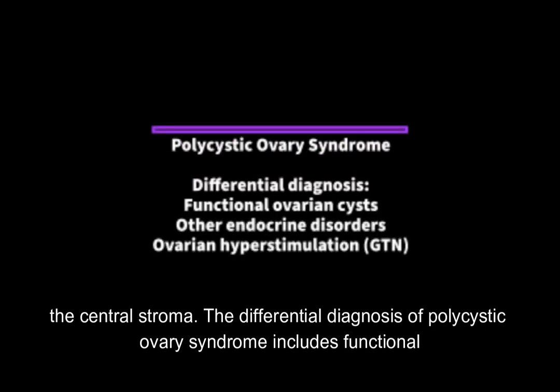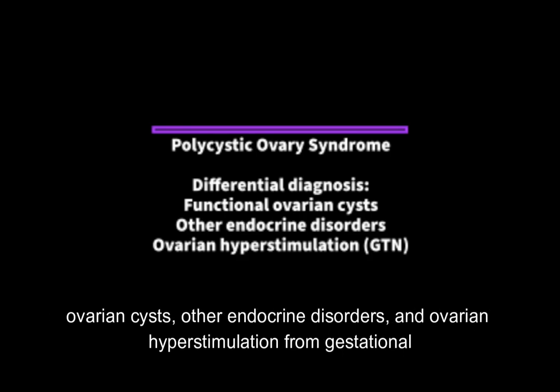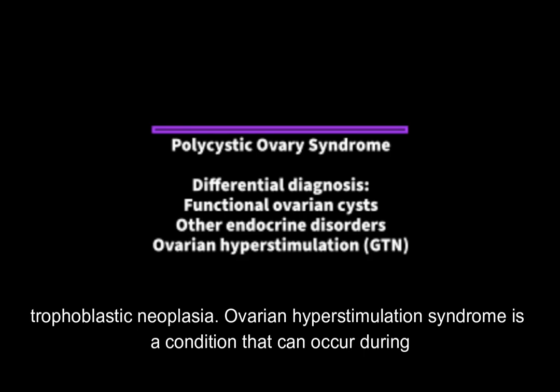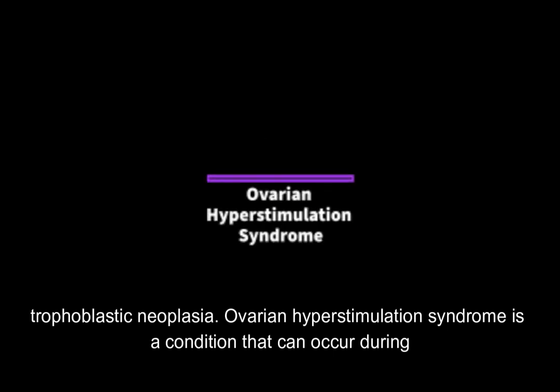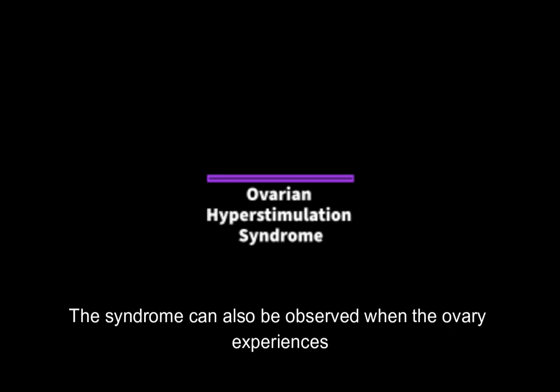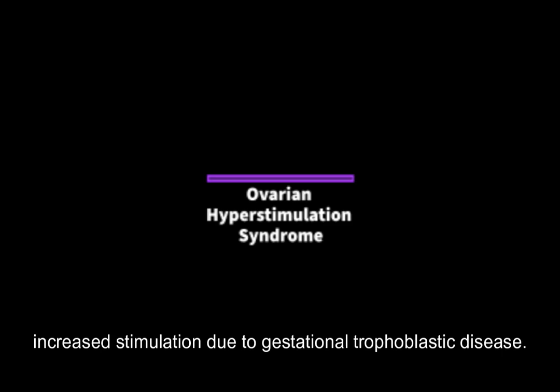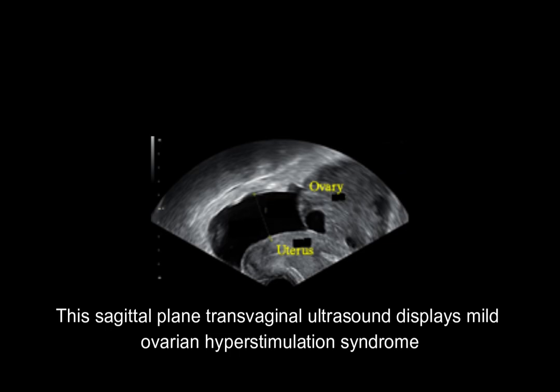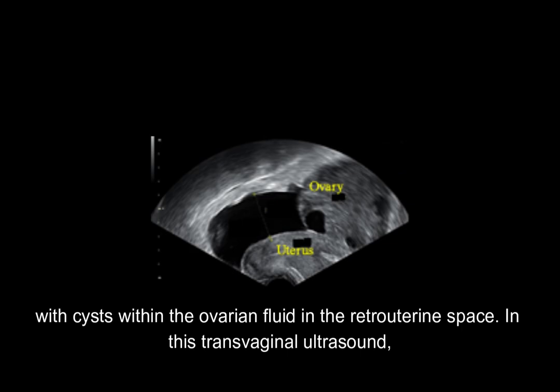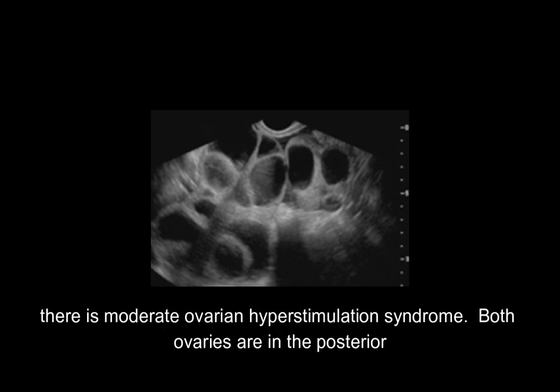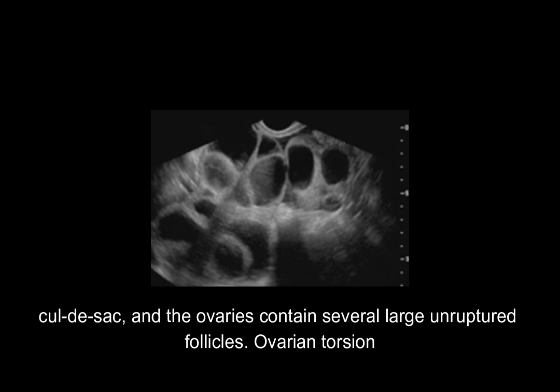The differential diagnosis of polycystic ovary syndrome includes functional ovarian cysts, other endocrine disorders, and ovarian hyperstimulation from gestational trophoblastic neoplasia. Ovarian hyperstimulation syndrome is a condition that can occur during infertility treatment when the ovary is excessively stimulated to induce ovulation, and can also be observed with gestational trophoblastic disease. A sagittal plane transvaginal ultrasound displays mild ovarian hyperstimulation syndrome with cysts within the ovary and fluid in the retrouterine space. In moderate ovarian hyperstimulation syndrome, both ovaries are in the posterior cul-de-sac and contain several large unruptured follicles.